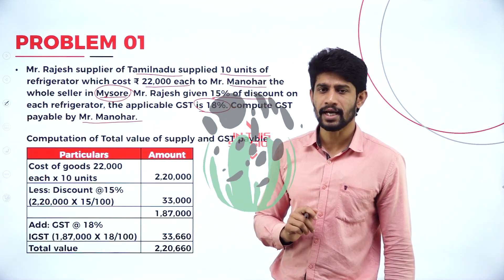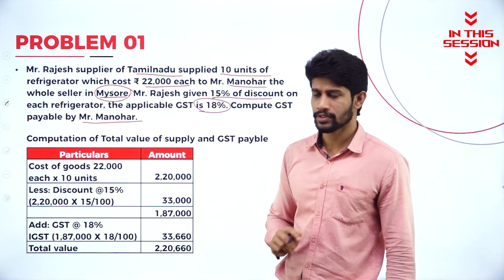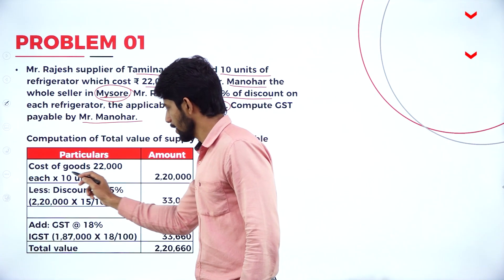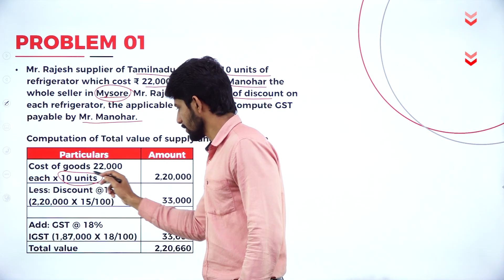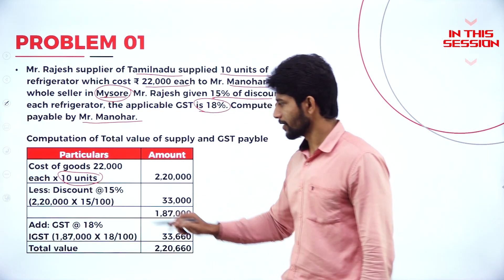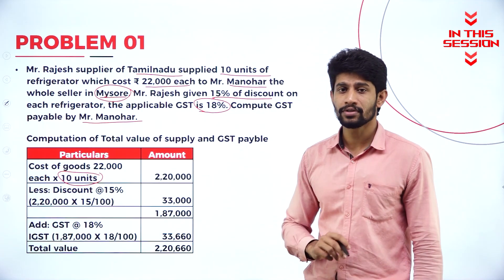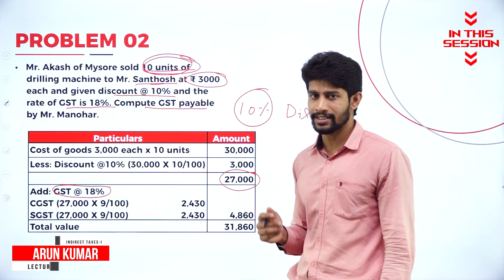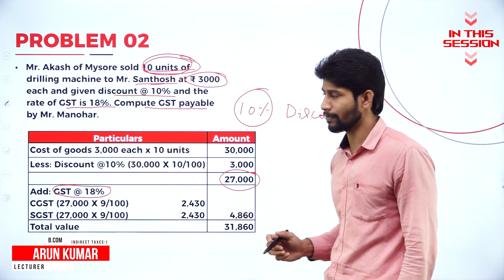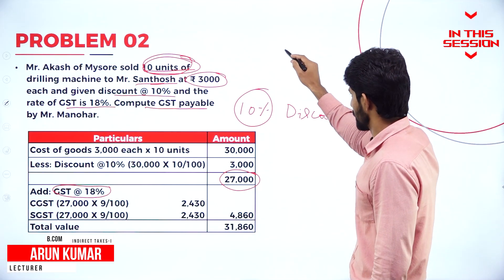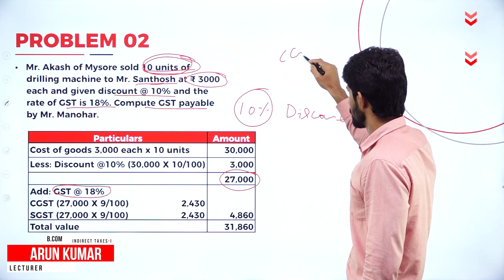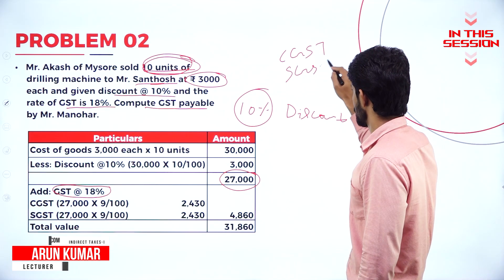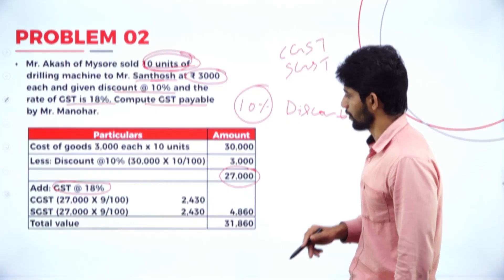One refrigerator they are charging 22,000. So how many refrigerators they are supplying? They are supplying 10 units of refrigerators. So if they are in the same state, within the state supply, which tax is applicable? CGST and SGST is applicable.